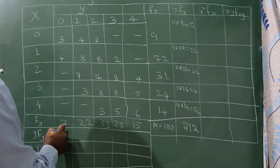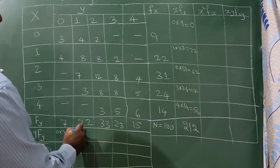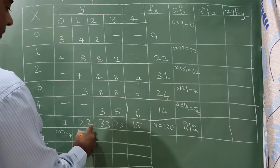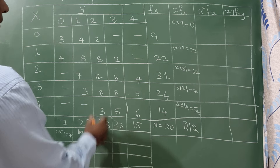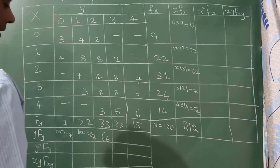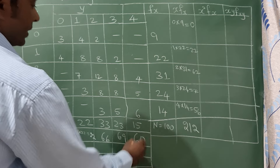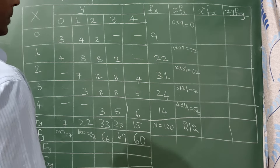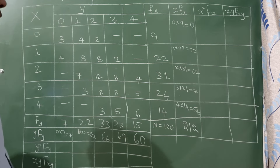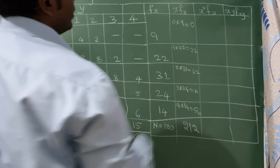For the y·fy column: 0×7 = 0, 1×22 = 22, 2×33 = 66, 3×23 = 69, and 4×15 = 60. This gives the summation of y·fy = 217.